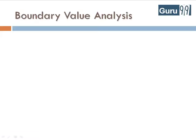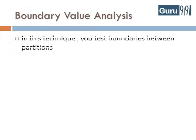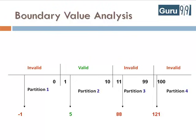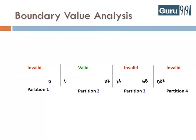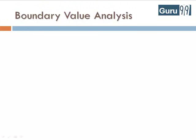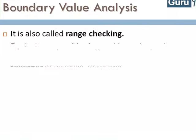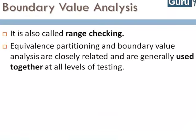The next technique is boundary value analysis. In this technique, you test boundaries between partitions. As in our earlier example, instead of checking one value from each partition, you will check the values at the boundaries like 0, 1, 10, 11, and so on. Boundary value analysis is also called range checking. Equivalence partitioning and boundary value analysis are closely related and are generally used together at all levels of testing.